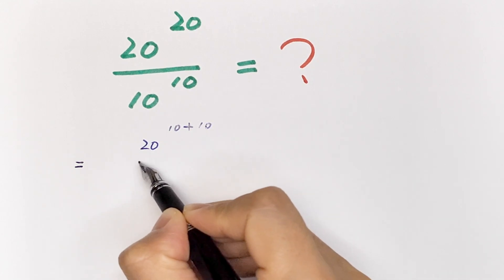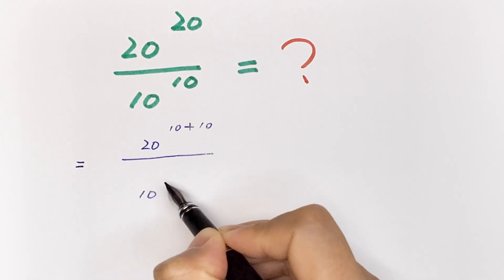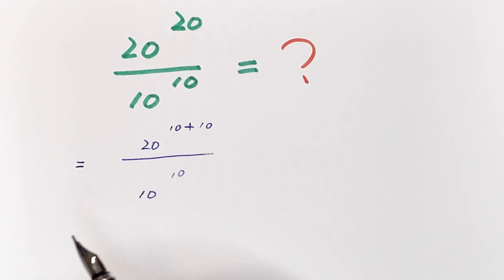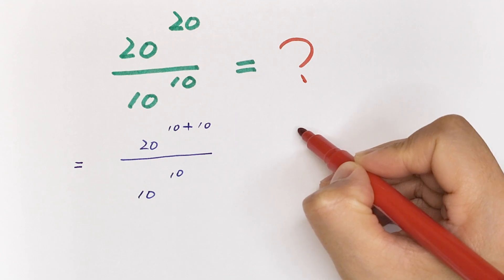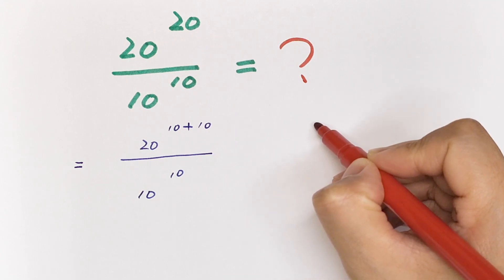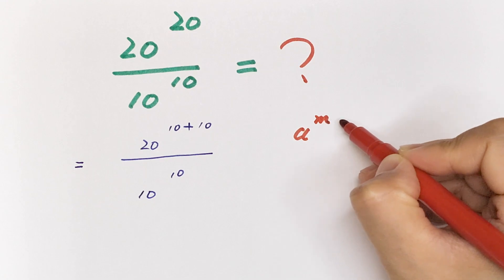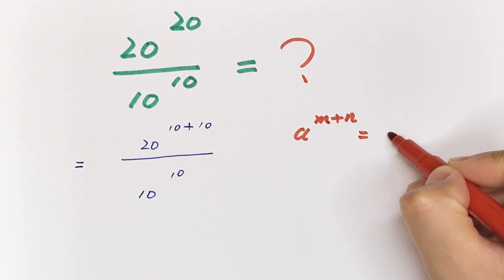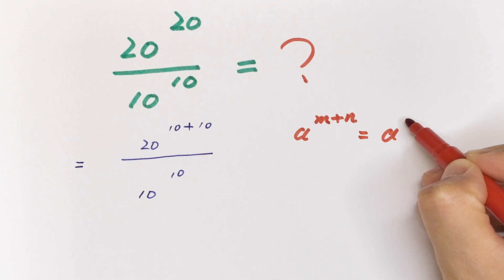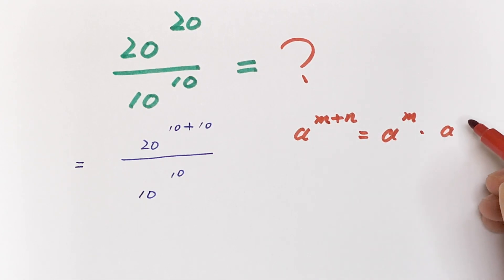In the numerator we will apply the exponential rule that a to the power of m plus n is equal to a to the power of m times a to the power of n.